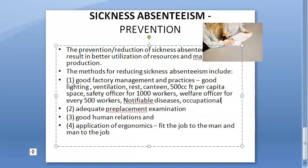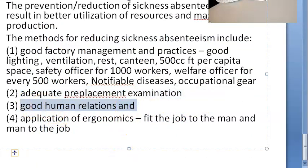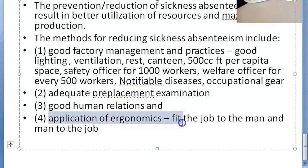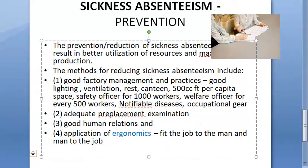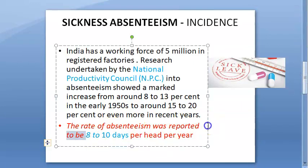Further prevention measures include providing occupational gear such as goggles, gloves, and masks; pre-placement health examinations; annual checkups to monitor health progress; good human relationships to reduce stress; and application of ergonomics — fitting the person to the job and the job to the person. That completes sickness absenteeism.